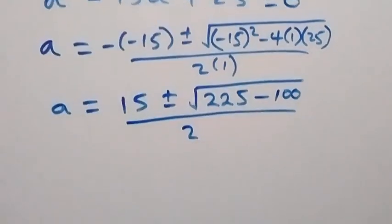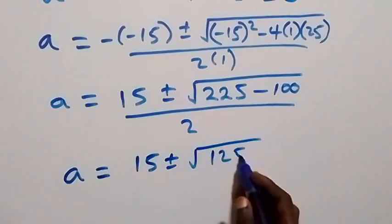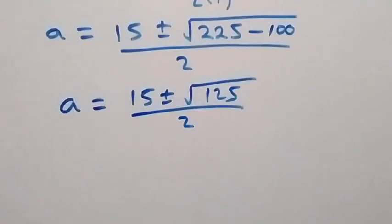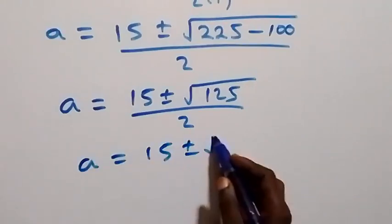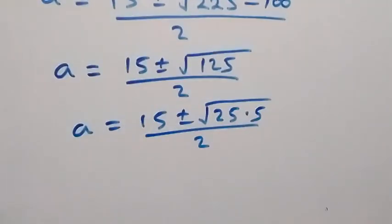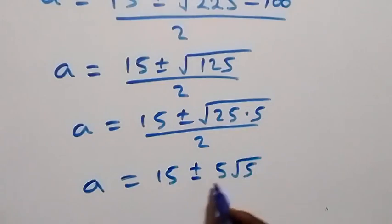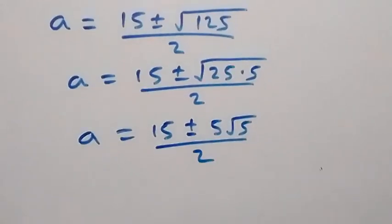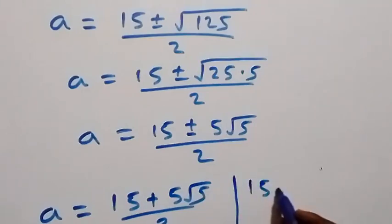Simplifying further, we have a equals fifteen plus or minus the square root of two hundred twenty-five minus one hundred, which is the square root of one hundred twenty-five. That's the square root of twenty-five times five, and root twenty-five is five. So a equals fifteen plus or minus five root five, all over two. This gives two values: a1 equals fifteen plus five root five over two, and a2 equals fifteen minus five root five over two.